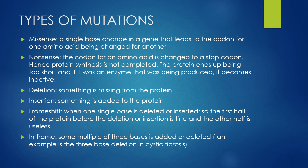We have frameshift and in-frame mutations. In a frameshift mutation, a single base is either deleted or inserted. The first half of the protein before the deletion or insertion is fine, but the other half becomes totally useless. In an in-frame mutation, a multiple of three bases is added or deleted. An example is the three-base deletion seen in cystic fibrosis.